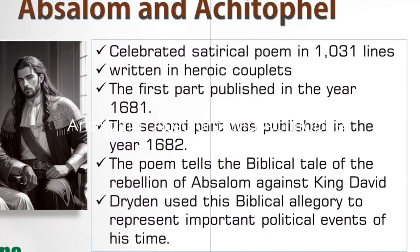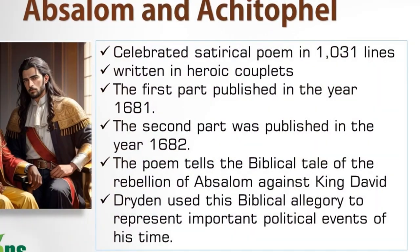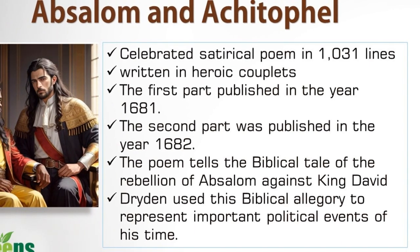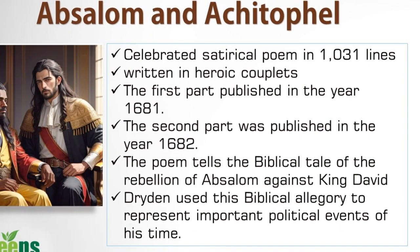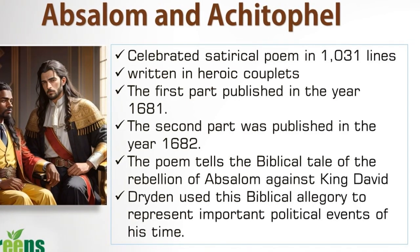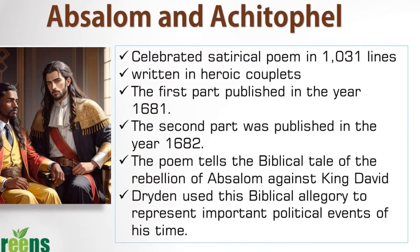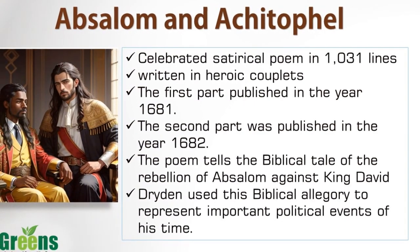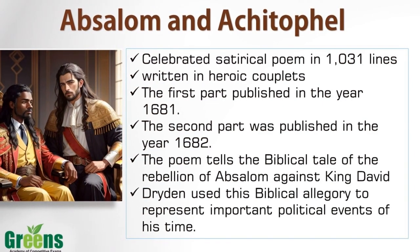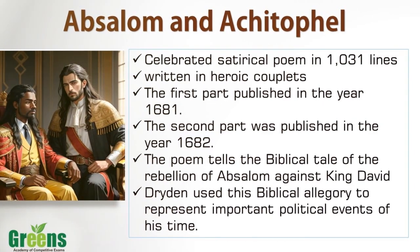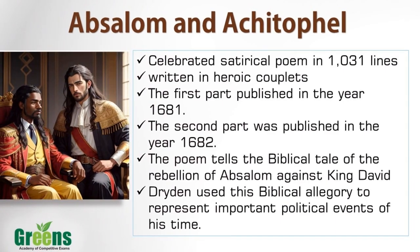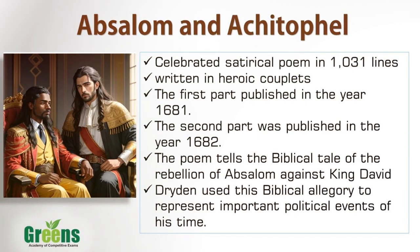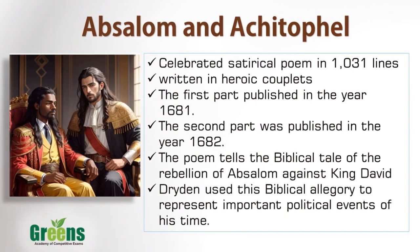One of Dryden's most well-known works is Absalom and Achitophel. This political verse satire consists of 1031 lines and was published in two parts. The first part was published in 1681, and the second part in 1682, though the second part was largely composed by Nahum Tate, a playwright and contemporary of Dryden. Dryden contributed only 200 lines. The poem is written in heroic couplets.